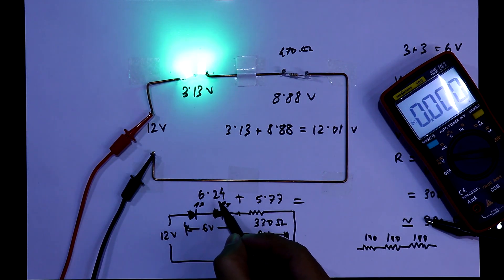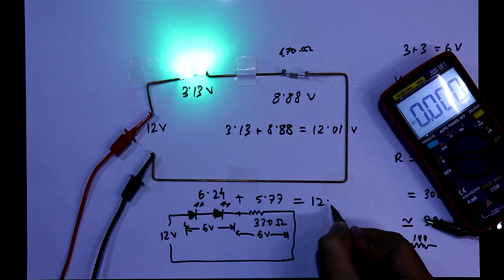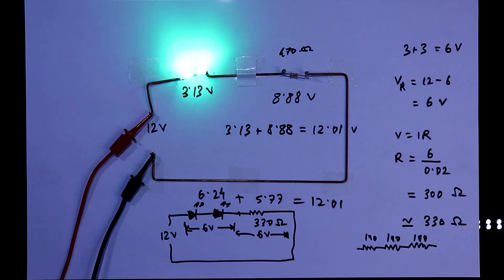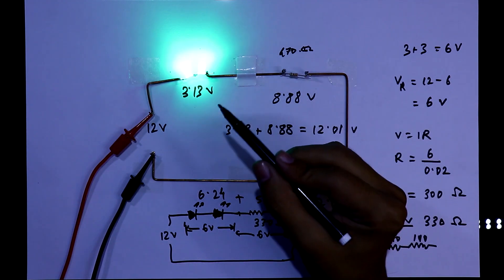6.24 plus 5.77, it is again we are getting 12.01V. So this is how the resistor is working in this circuit.